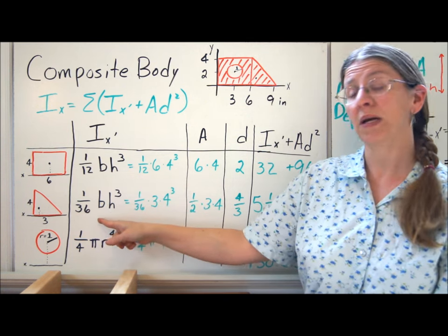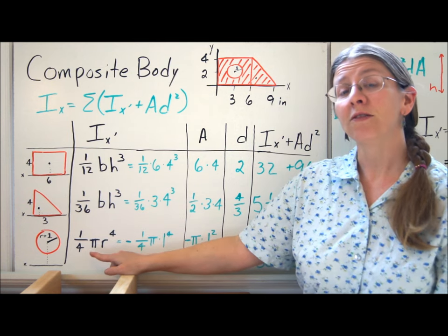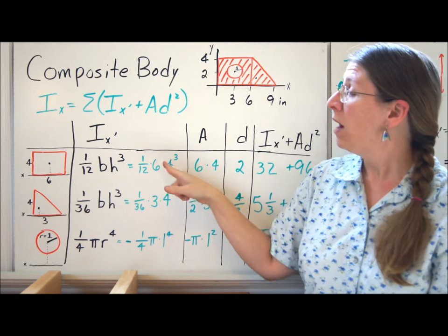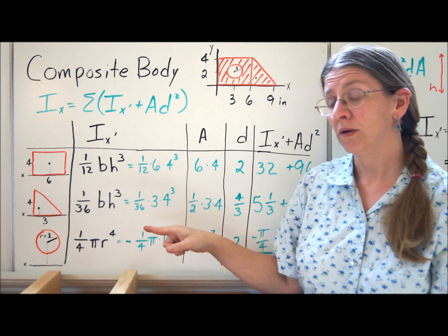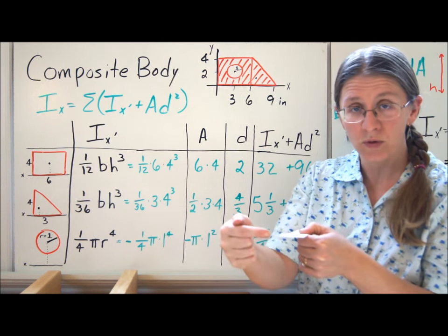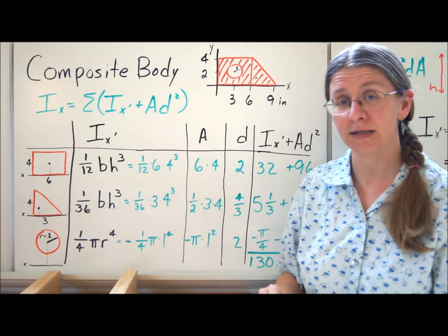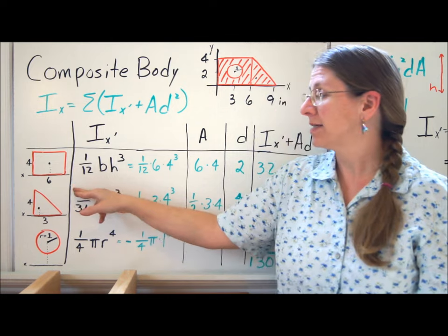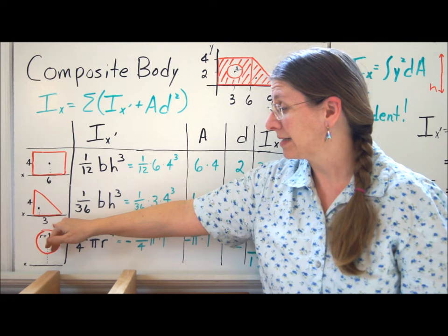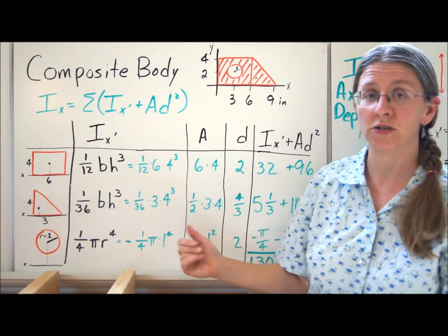1 twelfth bh cubed, 1 thirty-sixth bh cubed, and pi r to the 4th over 4. Once you've got those memorized, then we can use this to do any other shape. Which one gets cubed? Remember what I want to know is how far off the axis is my stuff. So the cubed one is perpendicular to your axis. So if my x-axis is here, cube the one that's perpendicular to it, cube the 4. My axis is here, cube the 4. For a circle it doesn't matter, because you've got r to the 4th.